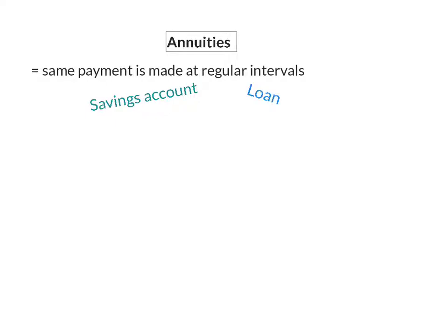An annuity is when equal or the same payment is made at regular intervals. Examples of annuities could be a savings account where you invest the same amount every month to save up for your future planning. Then it can also be regular repayments on a loan. If you have a car or a home loan, then you will repay a specific amount each month for that loan.